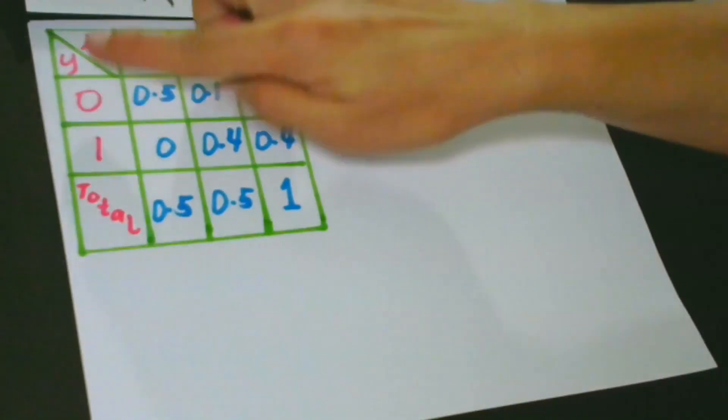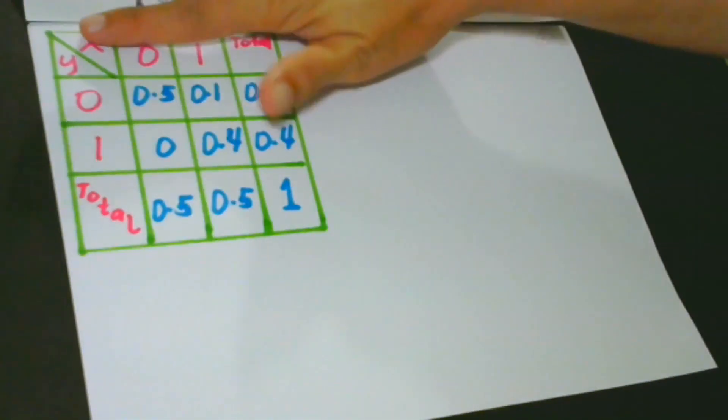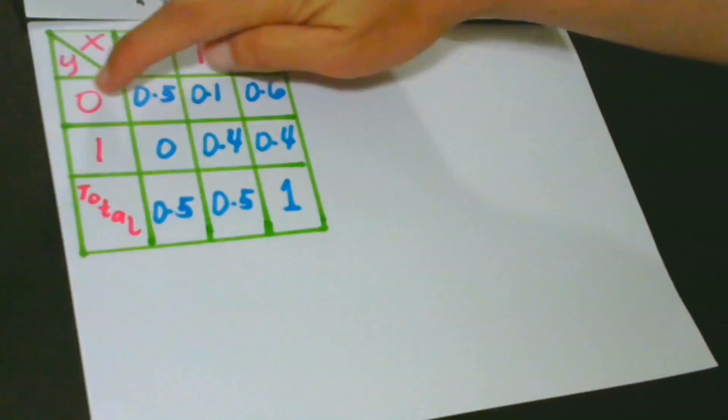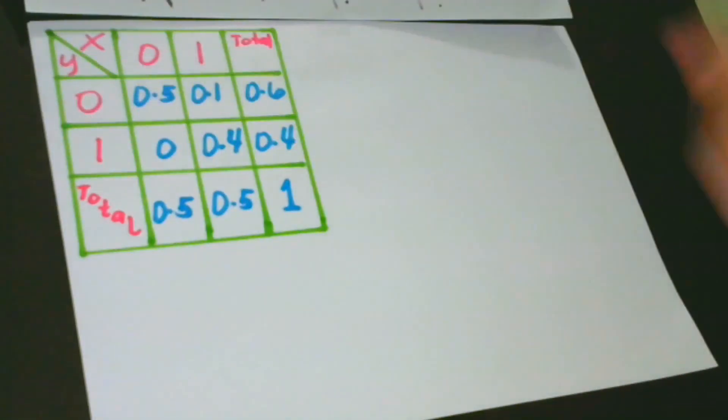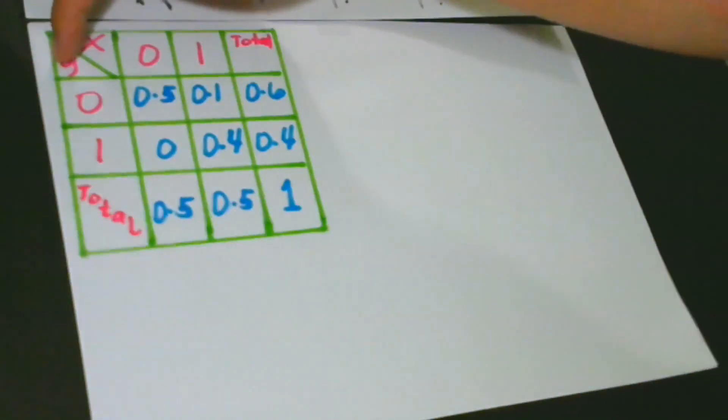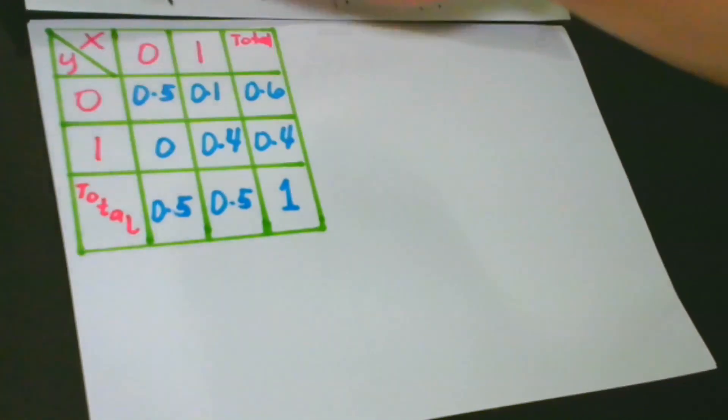Without referring to X, so we disregard X, we can find the probabilities of Y. Similarly, without referring to Y, so we will not talk about Y but we will just talk about X, we can find the values of X.